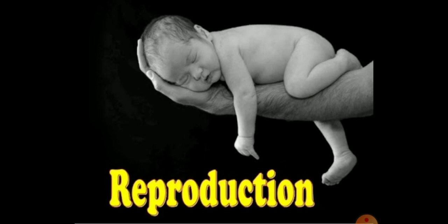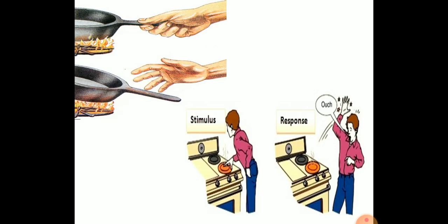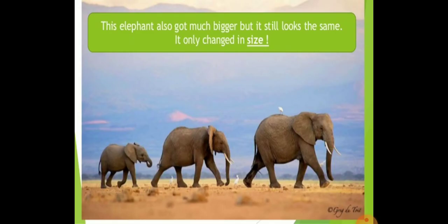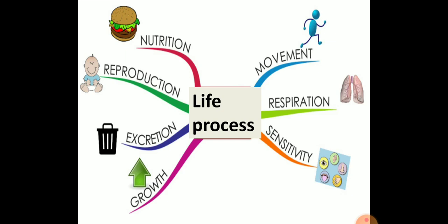Reproducing means giving birth to new young ones. So all these are the basic activities: nutrition, reproduction, excretion, growth, movement, respiration, and sensitivity.